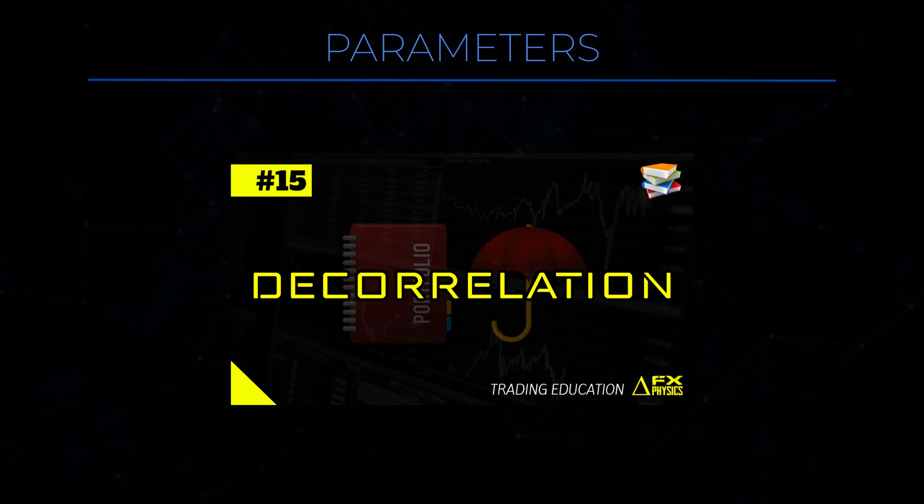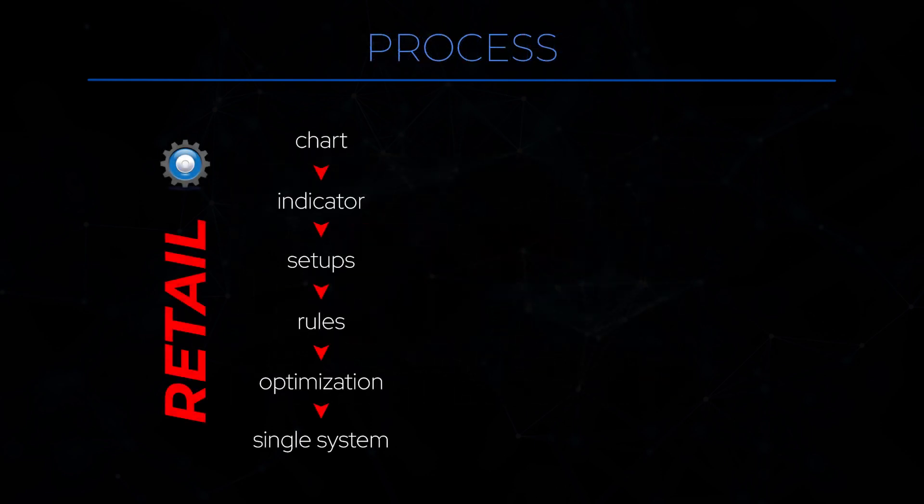So now we've clarified the nature and proper use of indicators, it is time to make it all come together in a single process. First, here is the typical retail process that includes the use of indicators — the one you should avoid. It starts with looking at the chart, then slapping an indicator, then eyeballing a few setups, then making up a few rules on the spot, optimizing the parameters into oblivion, and coming up with a single system. As you know now, this is obviously wrong.